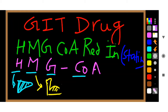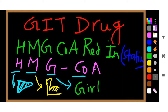Myositis also includes rhabdomyolysis. G means a pregnant girl — G stands for a girl who is pregnant. Statins are contraindicated in pregnancy, which is why G represents a pregnant girl.